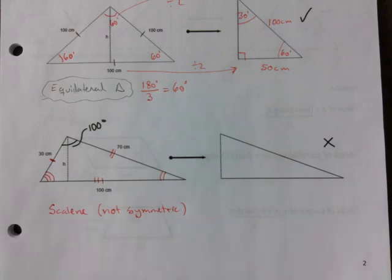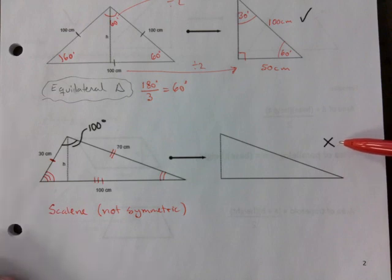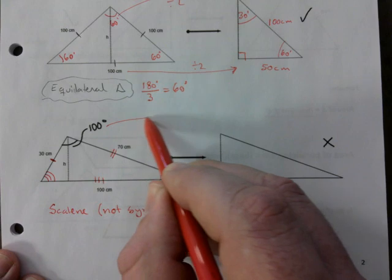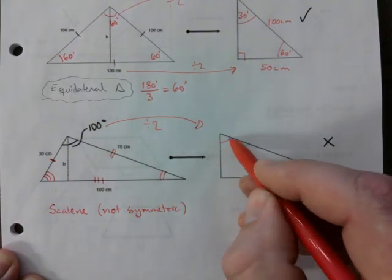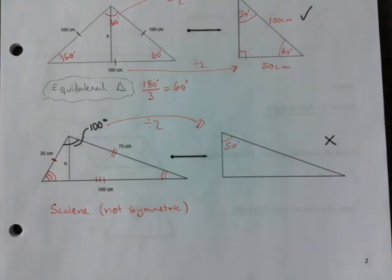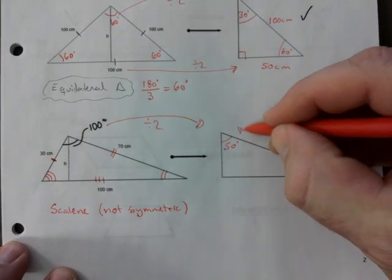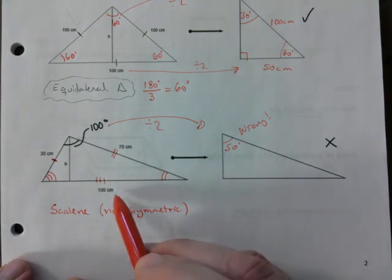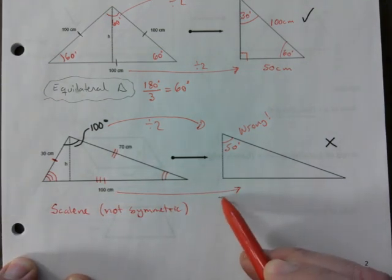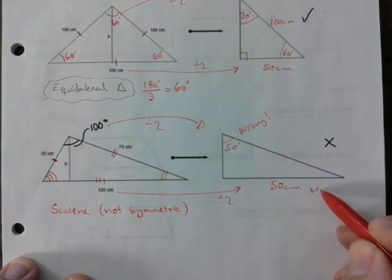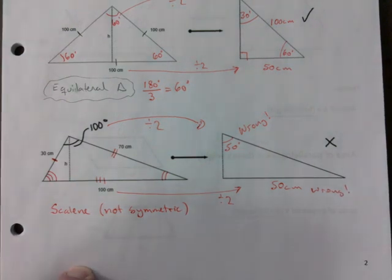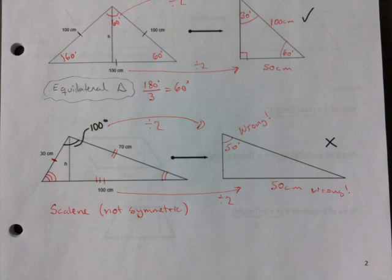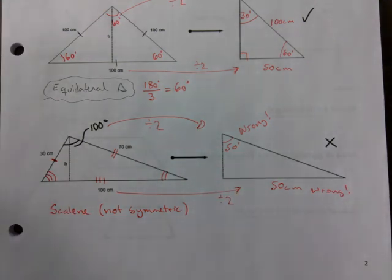That's why there's an X here. What I'm saying is you can't just say 'there's a 100 here, I'm going to split it in half and make this 50' — that's wrong. You also can't take the 100 down here, split it in half, and say this is 50 centimeters — that's wrong too. In this case you are not able to do the trick where you cut in half, because it's asymmetric.